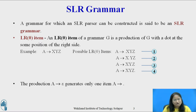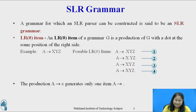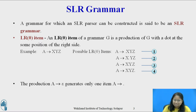An item indicates how much of a production we have seen at a given point in the parsing process. For example, the first item above indicates that we hope to see a string derivable from xyz next on input. The second item indicates that we have just seen on input a string derivable from x, and that we hope to see a string derivable from yz.